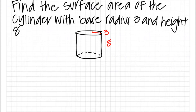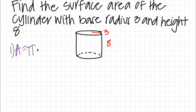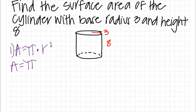The directions are to find the surface area of a cylinder with base radius 3 and height 8. First, we will find the area of the circle using the formula A equals pi multiplied by r squared. When we plug the radius into the formula, it should be A equals pi multiplied by 3 to the power of 2.